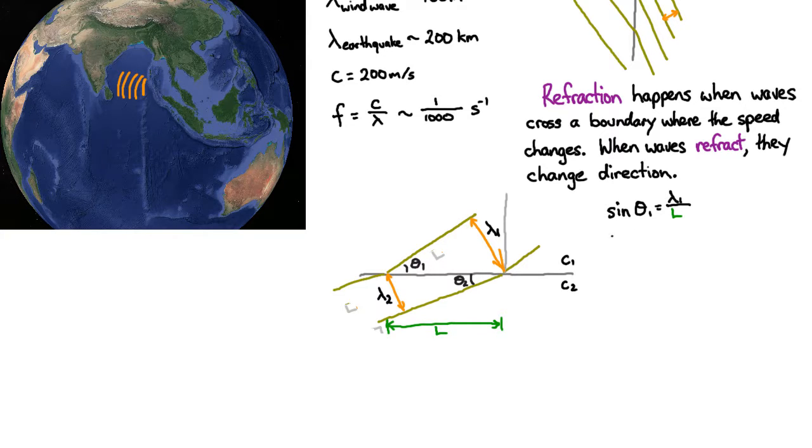And similarly, sine of theta 2 is just going to be that length divided by that length, which is just lambda 2 divided by L. And if we rearrange for L, and obviously L equals L, and therefore the right-hand sides equal each other. And so if we set the two right-hand sides to be equal to each other, then we get this relationship.